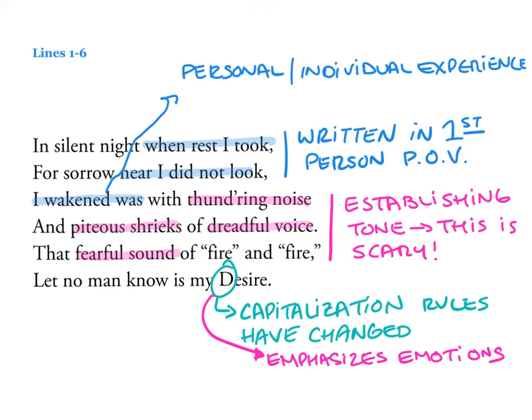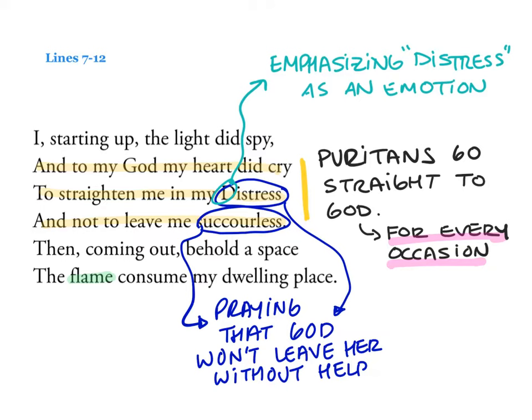An interesting point here regarding capitalization: capitalization rules in the English language have changed over time, but in this case she is focusing on this idea of desire — no one ever wants this to happen to your family or your home. So in this early and kind of odd break from traditional Puritan writing, she is emphasizing her personal emotions. 'I, starting up, the light did spy, and to my god my heart did cry, to straighten me in my distress, and not to leave me suckerless.' From the get-go we see that she goes straight to God — help me get through my distress. She's praying that God won't leave her without help. This is typical of Puritan writing — they're going to God for every occasion.